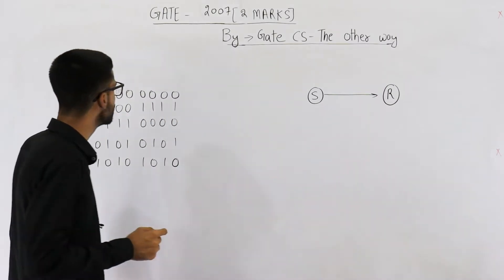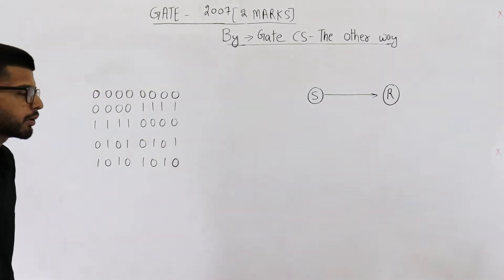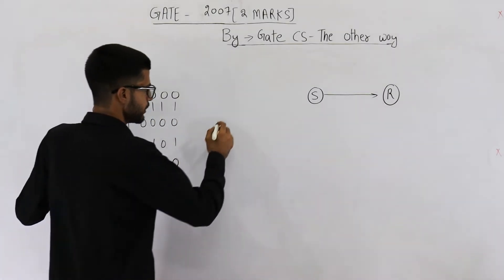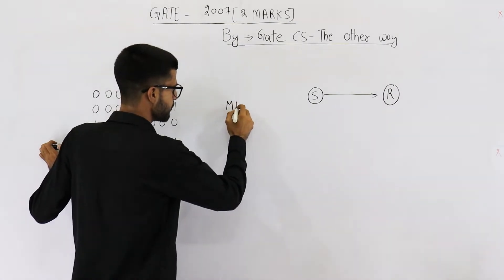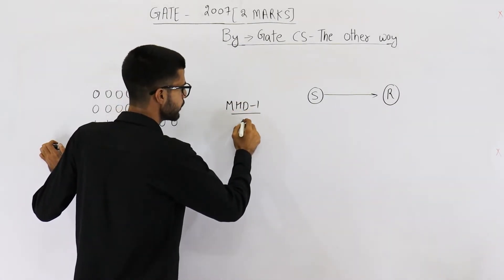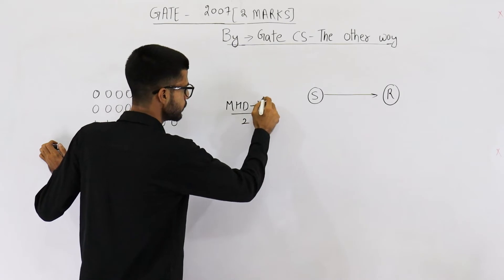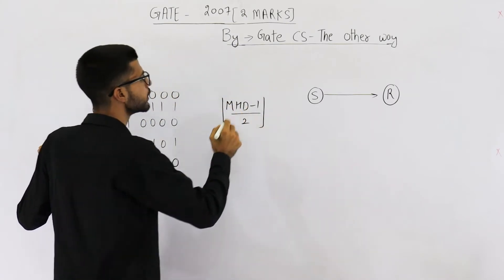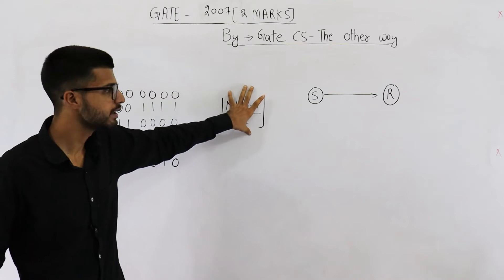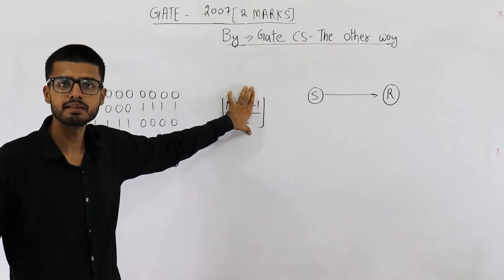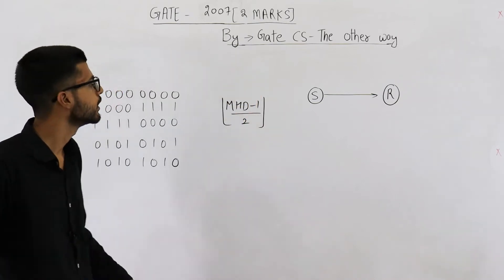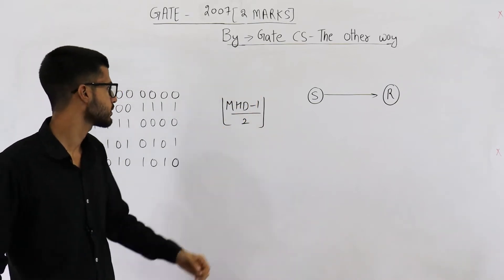For this, you actually need to know the minimum Hamming distance. The formula is: floor((minimum Hamming distance − 1) / 2). A maximum of these many bits, if they have an error, we can correct it. Let us find what this value is.